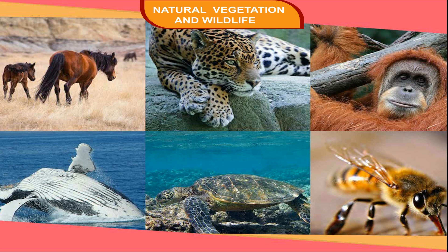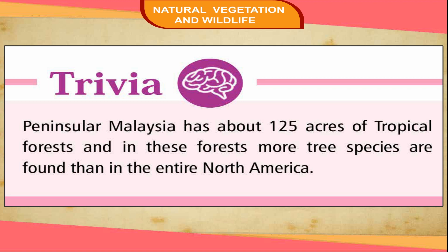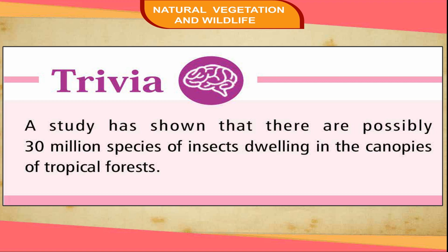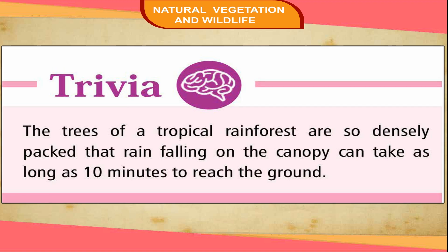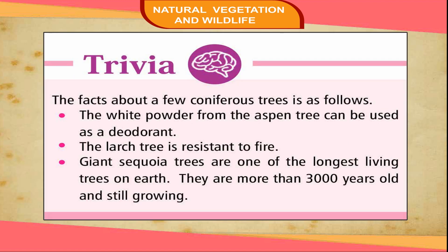Trivia: Peninsular Malaysia has about 125 acres of tropical forests, and in these forests more tree species are found than in the entire North America. A study has shown that there are possibly 30 million species of insects dwelling in the canopies of tropical forests. The trees of a tropical rainforest are so densely packed that rain falling on the canopy can take as long as 10 minutes to reach the ground. The white powder from the aspen tree can be used as a deodorant. Giant sequoia trees are one of the longest living trees on earth, more than 3,000 years old and still growing.